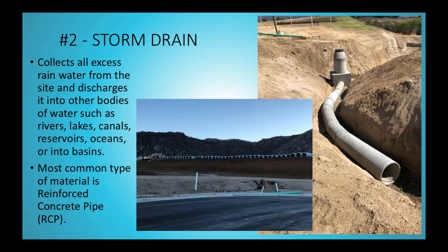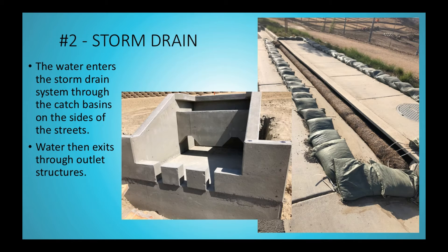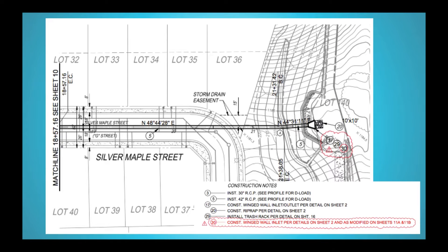The most common type of material for storm drain is RCP, or reinforced concrete pipe. There are other materials like HDPE, but again mostly what I see is RCP. The water will typically enter the storm drain system through catch basins located on the sides of streets, and when the water exits it's typically discharged through outlet structures. There are all sorts of different types of outlet structures, and this is just one of the designs from one of our projects.